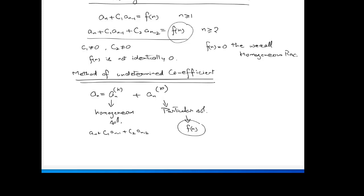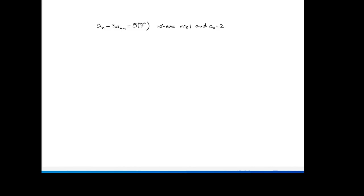First, we will solve a simple example. Solve the non-homogeneous recurrence relation aₙ - 3aₙ₋₁ = 5·7ⁿ, where n > 1 and initial condition a₀ = 2. The associated homogeneous solution is c·3ⁿ, as solved in the previous lecture.